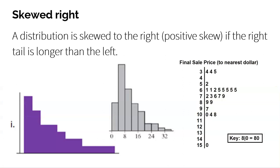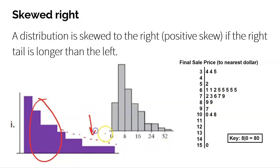Let's talk about some different shapes of data. One shape is skewed to the right. When you say skewed to the right, what this means is that the majority of your data is on the left, and as you move to larger values to the right, the data becomes less and less. In these first two histograms, the majority of the data is towards the lower values, and as we move to the higher values, there's less and less data. Some people call this a tail — if the tail is to the right, we say it's skewed to the right.